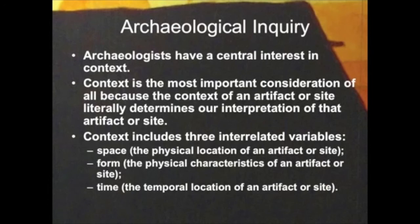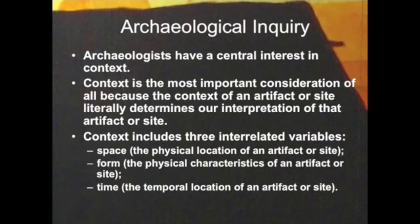Context is the most important quality that archaeologists initially address. Context is considered to be really the starting point for any discussion of the past — how and when were the artifacts, the objects, the materials, the cultural materials that we study deposited? And what do they tell us about a people? Ultimately, context requires the interrelationship between three variables: space — the physical location of the artifact or site; form — the physical characteristics or stylistic qualities of the artifact or site; and time — the temporal location of that artifact and/or site in the overall timeline of the region.